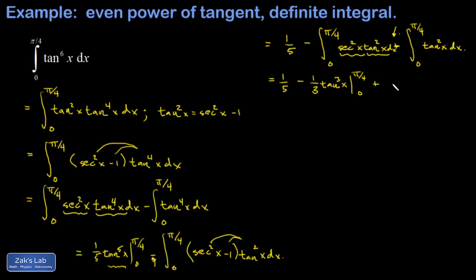In my final integral, all I'm going to do is replace tan²x with sec²x − 1 one more time. When I evaluate the tangent cubed piece across the limits of integration, the upper limit gives tangent of π/4 which is 1, so 1 to the third power; the lower limit gives zero because tangent of 0 is 0.